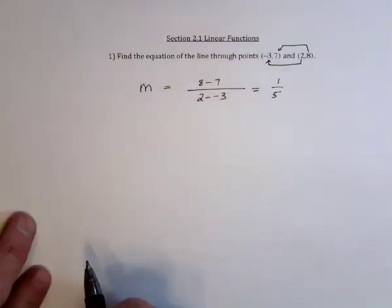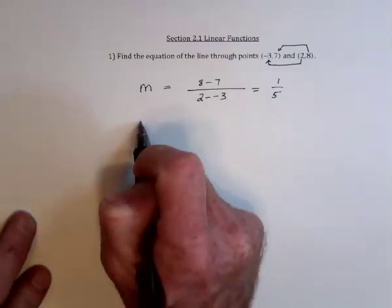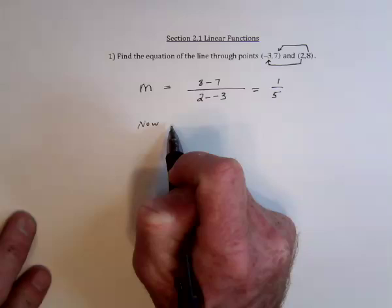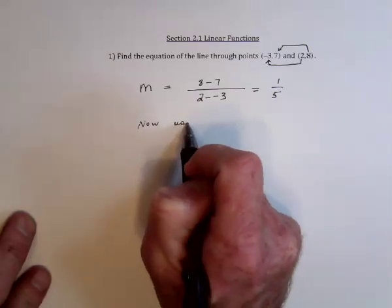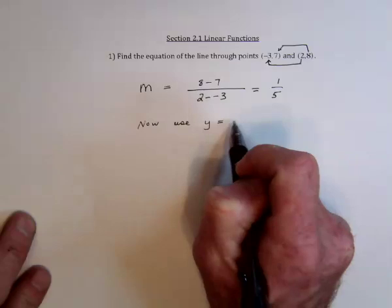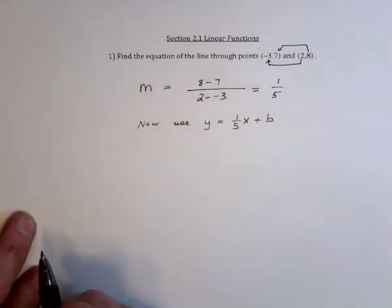So the slope is 1 fifth. That means the line is going up, but not very quickly. Now what I'm going to do is use the y-intercept form of a line, y equals mx plus b. So the m is placed in front of the x, the slope, and now we need to find b.